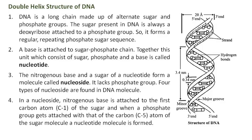Double helix structure of DNA: DNA is a long chain made up of alternate sugar and phosphate groups. The sugar present in DNA is always a deoxyribose attached to a phosphate group, so it forms a regular, repeating phosphate-sugar sequence. A base is attached to the sugar-phosphate chain. Together, this unit which consists of sugar, phosphate, and a base is called a nucleotide. The nitrogenous base and a sugar of a nucleotide form a molecule called a nucleoside, which lacks a phosphate group.